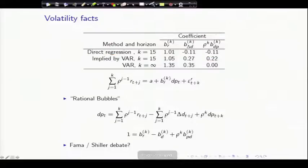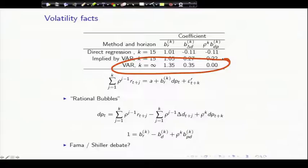The implied by VAR lines, let's look at the K equals infinity. Those are the ones where we go all the way out. So that is BR over 1 minus rho phi, and you can see how those numbers, that's where those numbers came from. Those are the ones implied, in fact, by the vector autoregression.